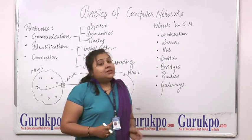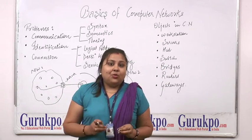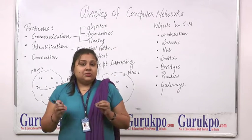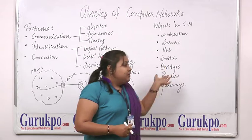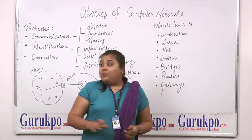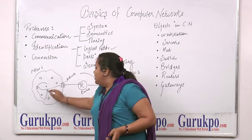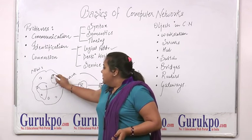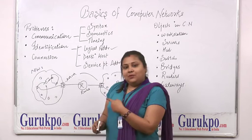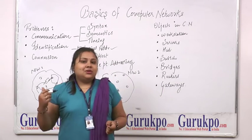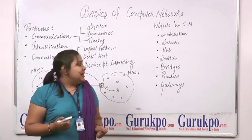Then comes switch. Switch is an intelligent device — it has software of its own. It is used at the data link layer of the OSI model. Then comes bridges. For example, if a network is being divided into small sub-networks, then a bridge is used to have communication between these two sub-networks. It is also used at the data link layer of the OSI model.